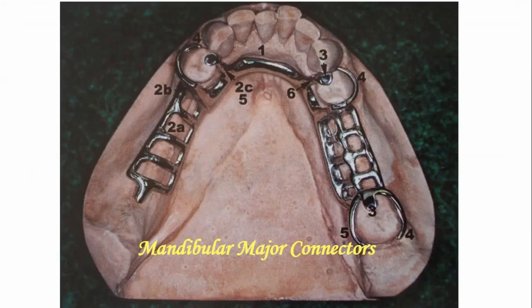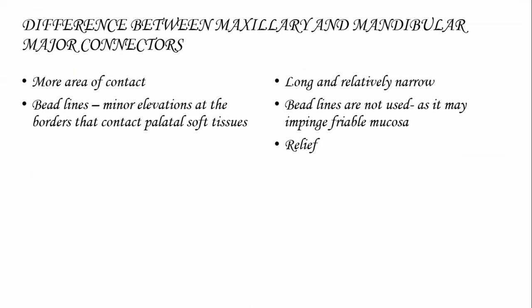Today I'm going to discuss in detail about mandibular major connectors. The main difference between maxillary and mandibular major connectors is that maxillary major connectors have a more area of contact, and they have bead lines — minor elevations at the borders that contact the palatal soft tissues. Mandibular major connectors are long and relatively narrow and must not impinge upon movable soft tissues such as the floor of the mouth, frenae, mandibular tori, and tongue. Bead lines are not used as they may impinge the friable mucosa, causing irritation, ulceration, and patient discomfort.